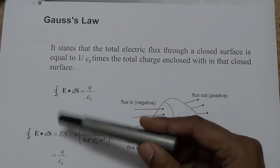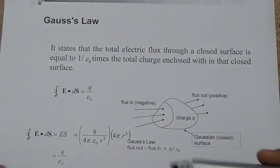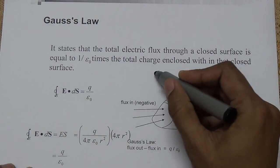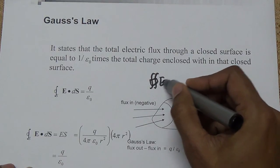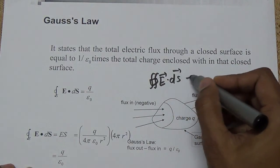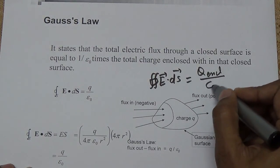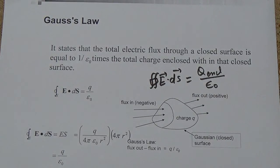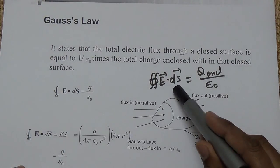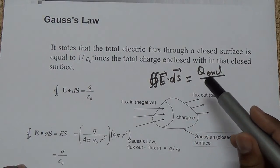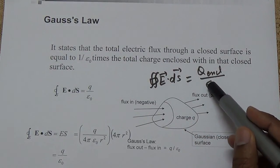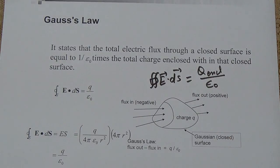From this law we know that the closed surface integral E·dS is equal to Q — the charge enclosed by the surface — divided by epsilon-naught. We have to convert this equation into the differential form with the help of the earlier two mathematical statements, one of which was the Gauss Divergence Theorem.